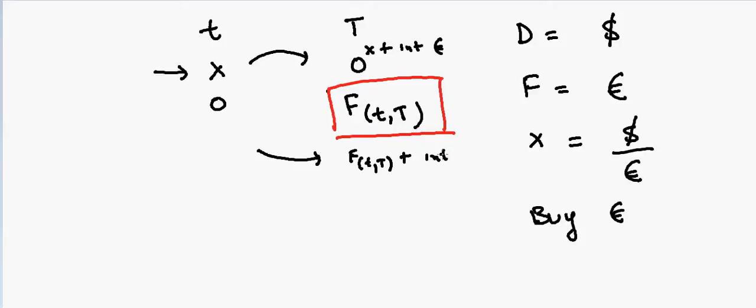interest in dollars. So if we equate both of them together, then it will be X plus interest in euros is equal to F(t,T) plus interest in dollars. So in that way, future price will be equal